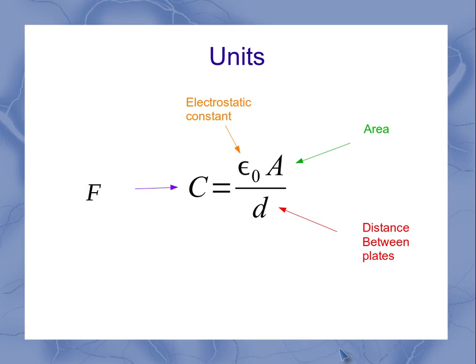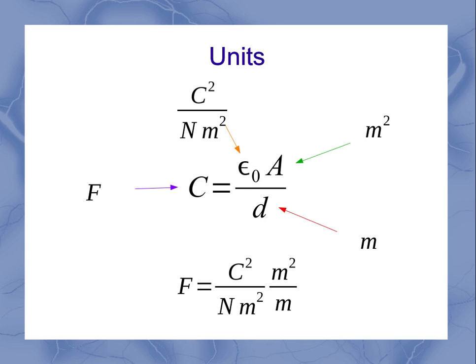Remember that capacitance had a standard unit of farad. My electrostatic constant, I just saw, was coulomb squared per newton meter squared. Area is going to have a standard unit of meter squared, and the distance between the plates is going to be meters. Taking all these and putting them together, what I see is over here on the right hand side, I've got coulomb squared per newton meter squared times a meter squared per meter.